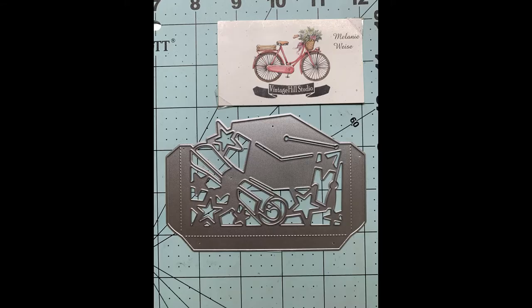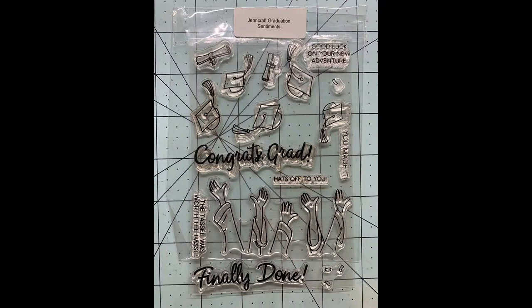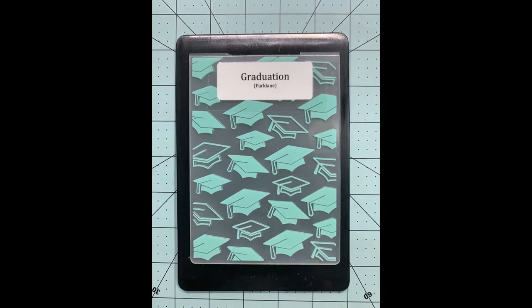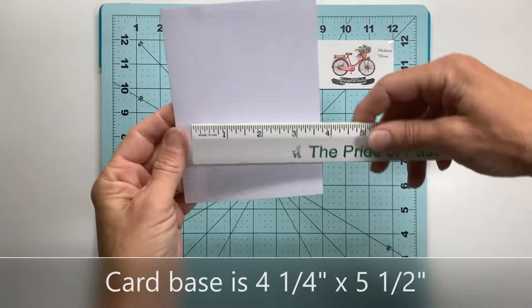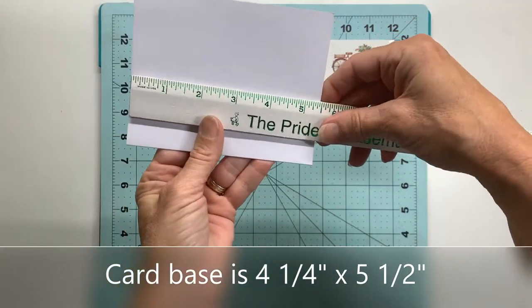First of all, I bought this die on Amazon and I have no idea who the maker is. These stamps are sold by Gen Craft, and Park Lane makes this embossing folder. To begin with, my card base is four and a quarter by five and a half.